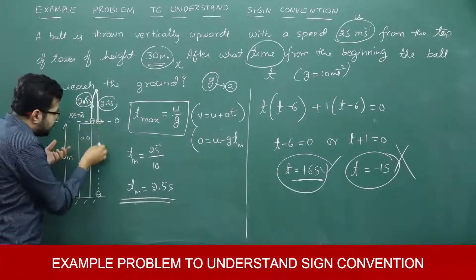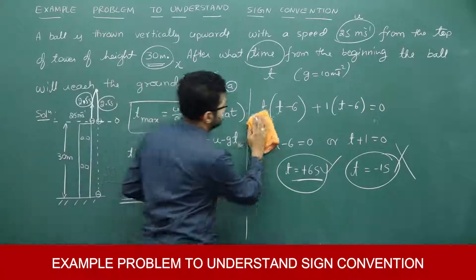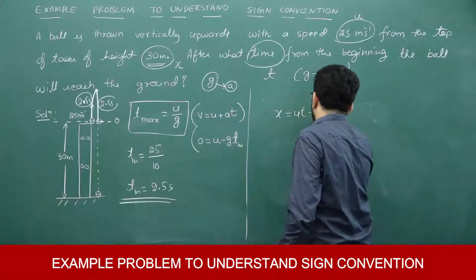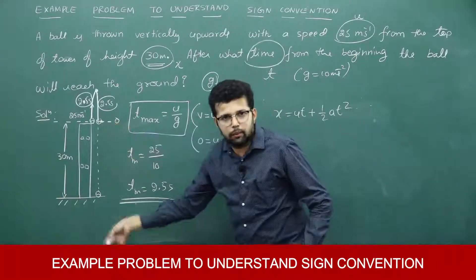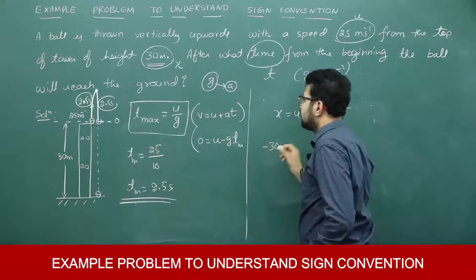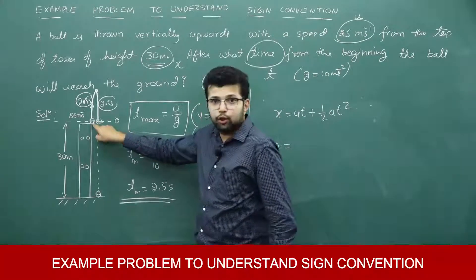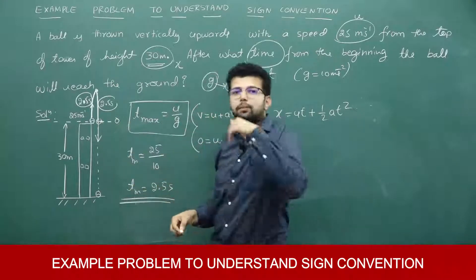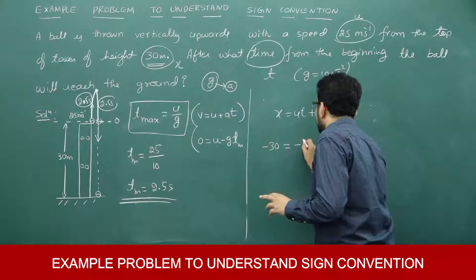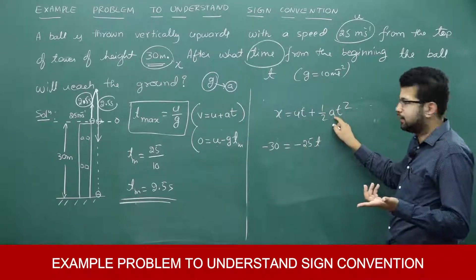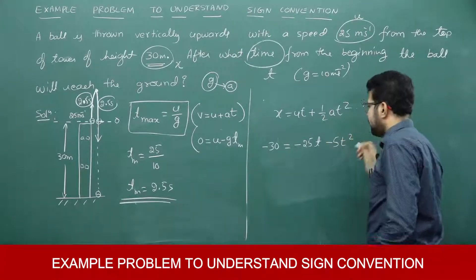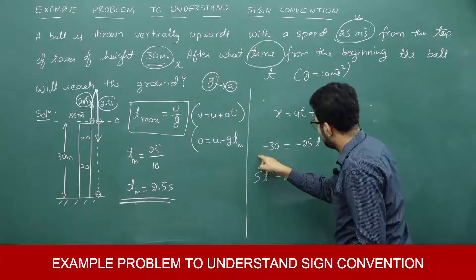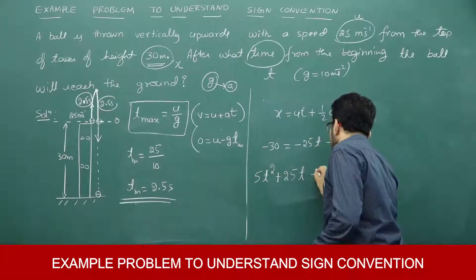Now, what is the additional time required for the ball to fall from the top of the tower to the ground? I will again use x = ut + ½at². The ball is moving downward, so displacement x = −30. Now the ball has a downward speed of 25 m/s at this point, so u = −25. With a = −10: −30 = −25t + ½(−10)t², which simplifies to −30 = −25t − 5t².